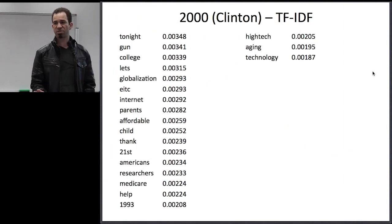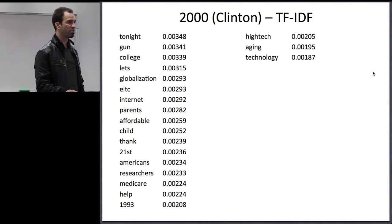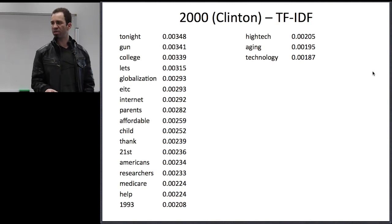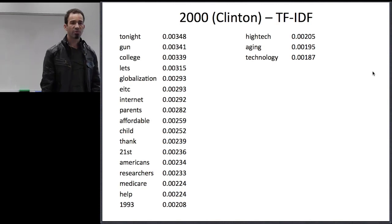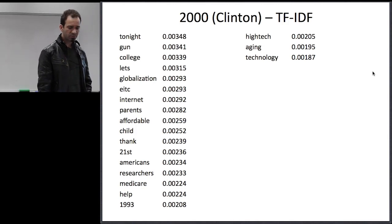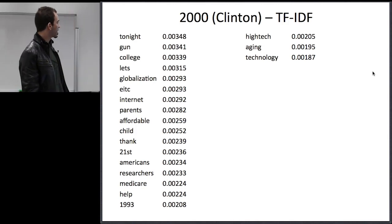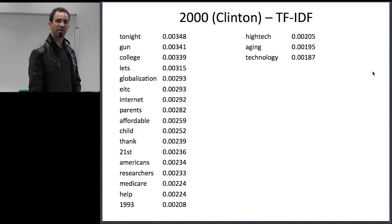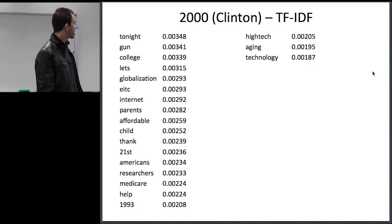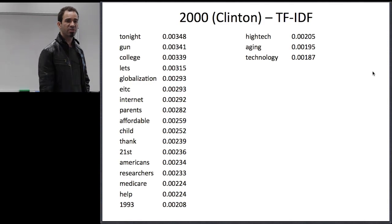I'm only going to take you through the results for one year, though I'll publish results on the blog for four years — 1980, 1990, 2000, and 2010 — where we have comparisons available. This is what it looks like when you extract a list of keywords.